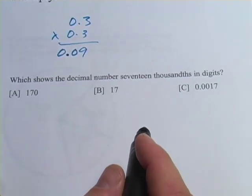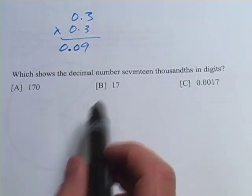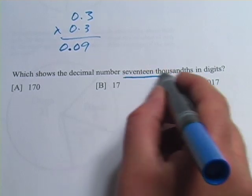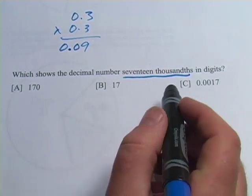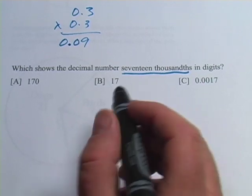All right, one more. This one says, which shows the decimal number 17 thousandths in digits? So we've got to write that out like a number, 17 thousandths.